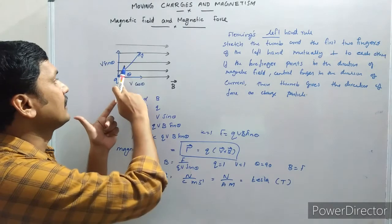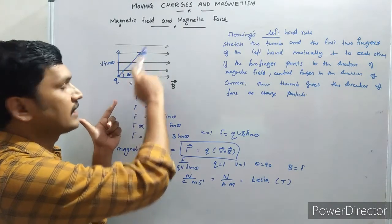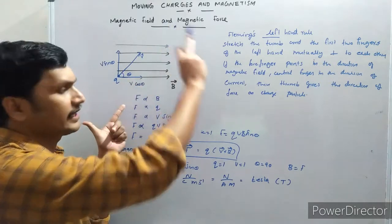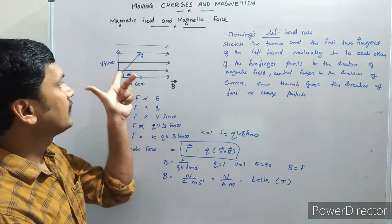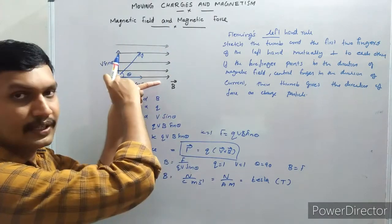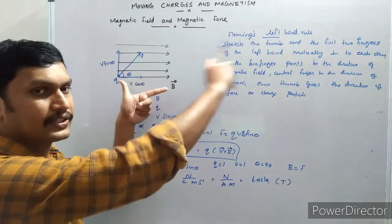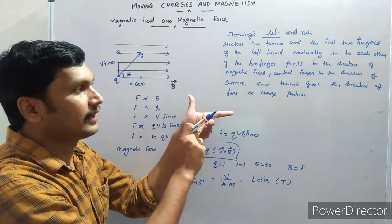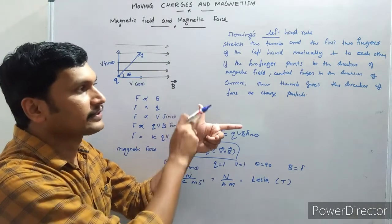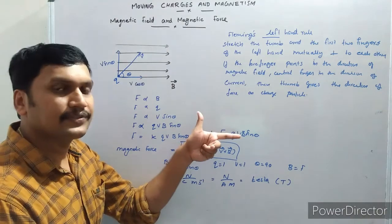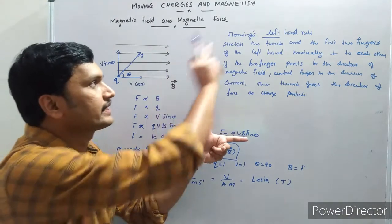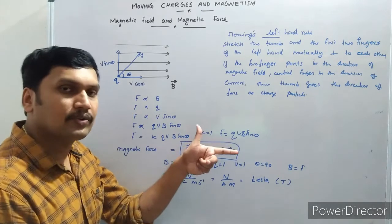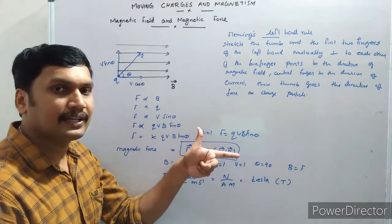You know that for a positive charge, the current is in the direction of motion of the positive charge. The middle finger points in the direction of current and then the thumb gives the direction of magnetic force. By using Fleming's left hand rule, we can predict the direction of magnetic force acting on a charge.